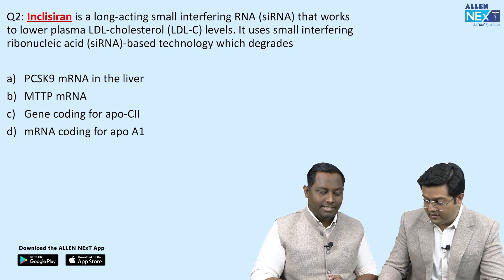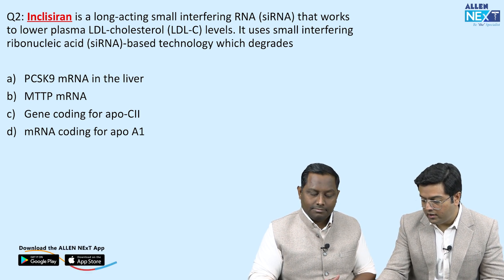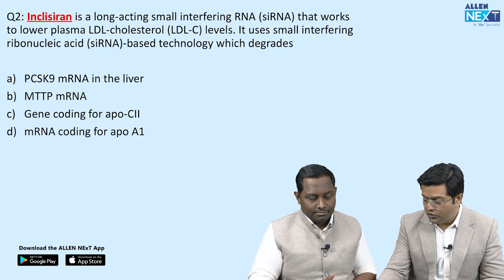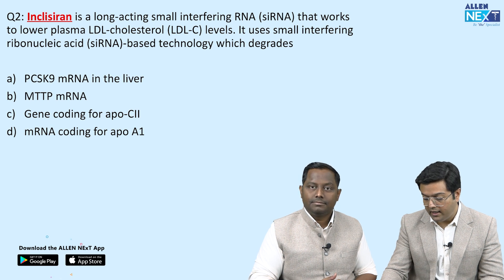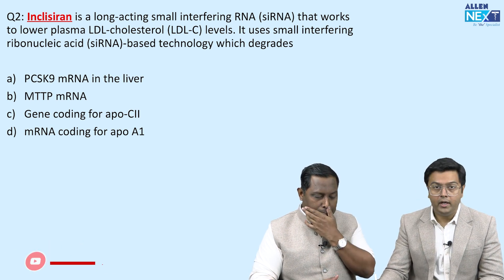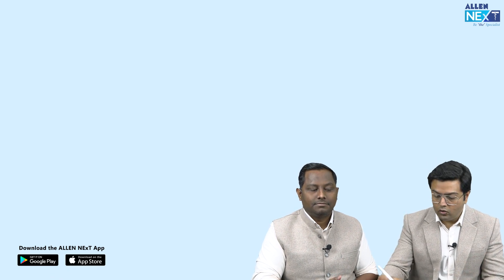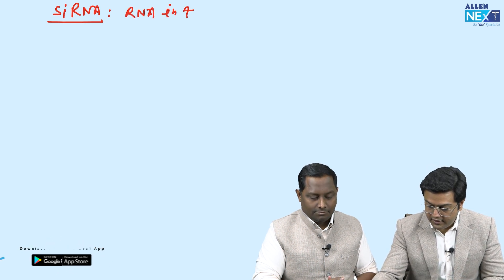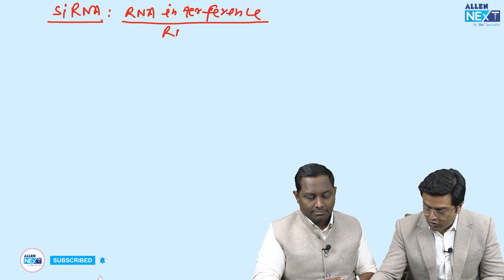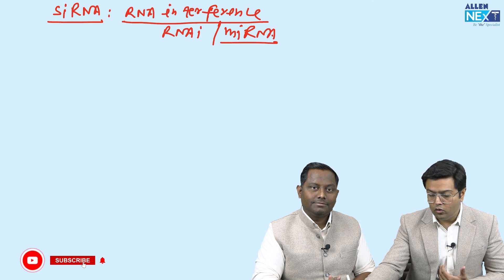Question two: inclisiran is a long-acting siRNA or small interfering RNA that works to lower plasma LDL cholesterol. It uses siRNA-based technology which degrades — options are: PCSK9 mRNA in the liver, MTTP mRNA, gene coding for ApoC2, and mRNA coding for ApoA1. About siRNA: it is also called RNA interference or RNAi. Micro-RNAs are made in our own body, while siRNA can be given exogenously or synthesized.